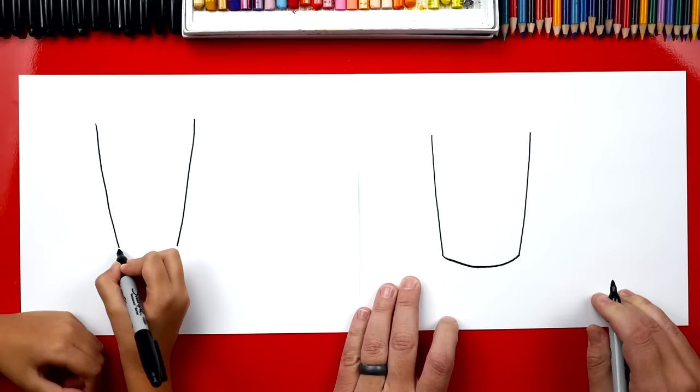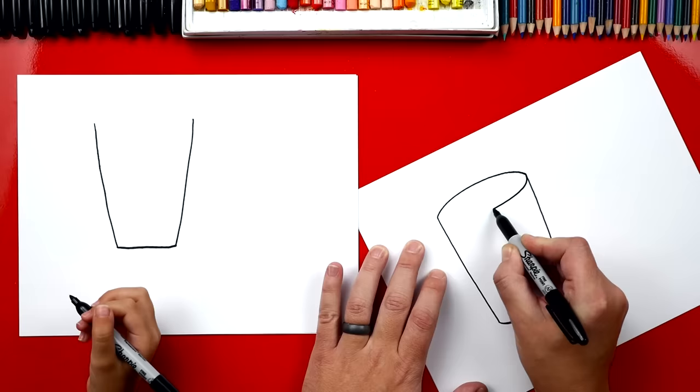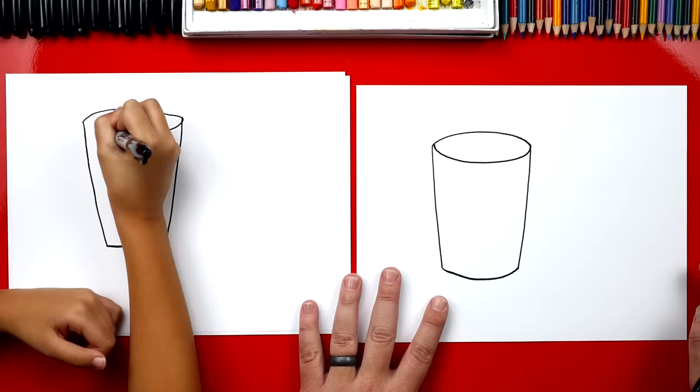Then down here we're gonna connect with a curve. So we're gonna come down and then back up. Now we're gonna draw an oval up here to connect these two lines. We're gonna draw a curve that comes around, connects, but then we're gonna keep going and back. Kind of tricky. Now it looks like a cup. Yeah, looks like a 3D cup. You did it just perfect.